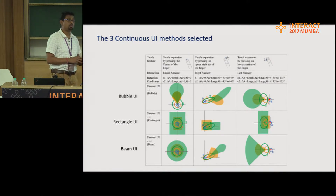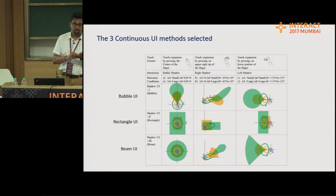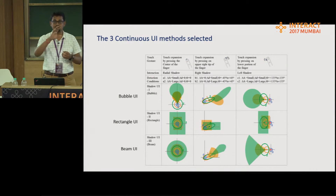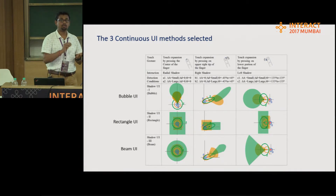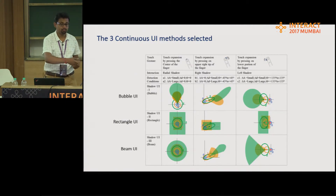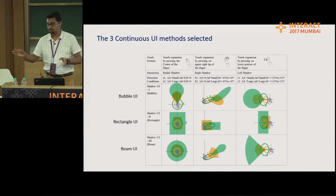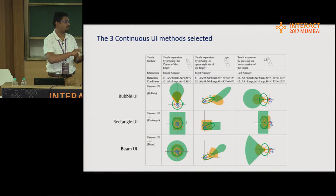What were these three UI elements? The first concept was known as the Bubble user interface — wherever you put your finger, a bubble pops out and spreads across the screen so you can access different elements right from where you are touching through Touch Shadow interaction. The second was the Rectangle user interface — the implementation was similar, only the graphics changed: a rectangle changes its shape based on the shape of the touch surface area. The third was the Beam user interface, which can be thought of like a torch rolling on a table making a shadow — the UI is in the form of a beam that can access different elements on the screen.